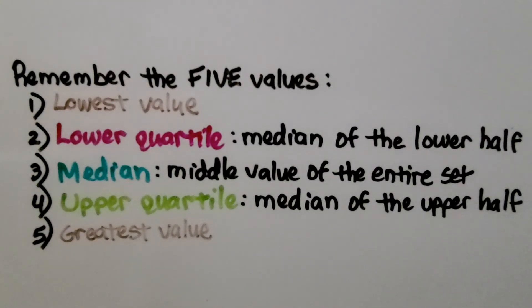Remember the five values. These five values are very important. We have to identify the lowest value, the lower quartile, which is the median of the lower half, the median, which is the middle value of the entire set, the upper quartile, which is the median of the upper half, and the greatest value.